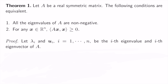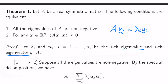Let's prove it. Let λᵢ and uᵢ be the i-th eigenvalue and i-th eigenvector of A, so that A·uᵢ equals λᵢ·uᵢ. First, assume condition 1 — that all eigenvalues are non-negative — and derive condition 2.